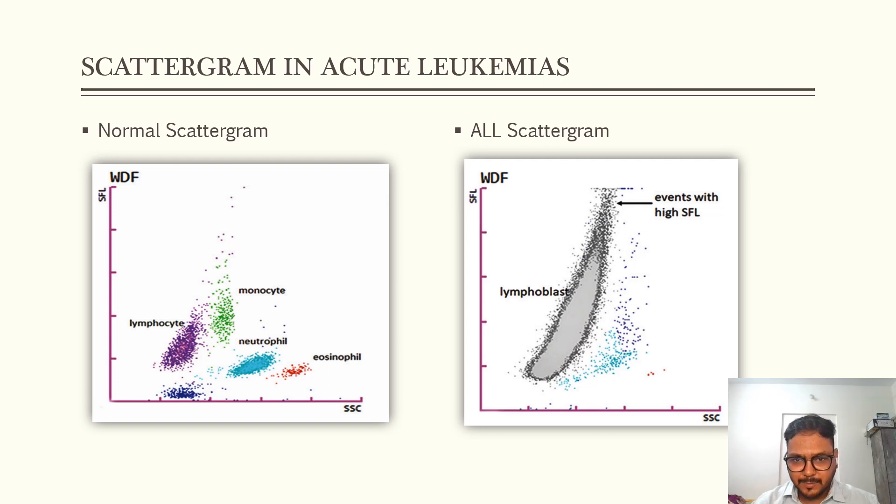Here is a scattergram of ALL. We can see there is a single huge cluster of lymphoblasts. As we can see it is seen in the area of the lymphocyte only but the blasts are larger in size so the cluster goes bit up and we can see high events with high SFL. This is because the membrane of the lymphoblast is quite permeable. So when the light hits, the fluorescence emitted from the nuclear material is more because the membrane is more permeable, so the fluorescence emitted by the DNA or the nucleic acid contents is more as compared to myeloblast.